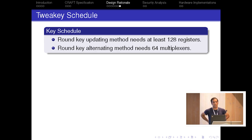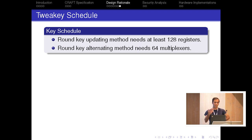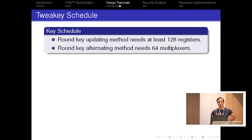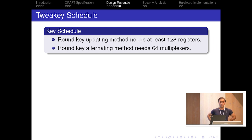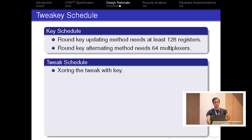Regarding the tweakey schedule: for the key schedule there were two options — round key updating and round key alternating. The first one needs at least 128 registers in a round-based implementation, but the second one needs only 64 multiplexers. To be lightweight in implementation, we decided to use the second one. For the tweakey schedule, we decided to simply XOR it with the key.